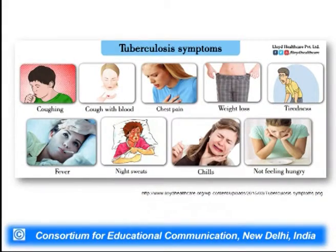The symptoms of tuberculosis mainly include coughing lasting more than three weeks, coughing along with blood, chest pain, loss of appetite, loss of weight, tiredness, fever, night sweats, and chills. These are the common symptoms reported by tuberculosis-infected persons.